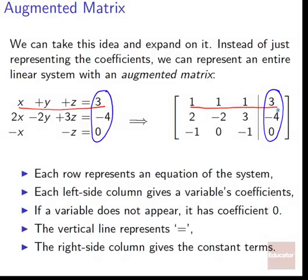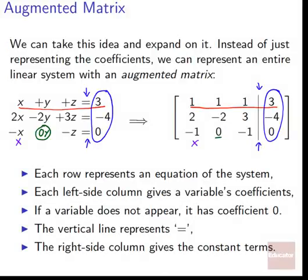Each left-side column gives a variable's coefficients — all the coefficients of x show up in the first column: 1, 2, and negative 1. If a variable does not appear, it has a coefficient of zero. The vertical line represents equality, since it represents each of the equal signs. And finally, the right-side column of our matrix gives us the constant terms from our equations.